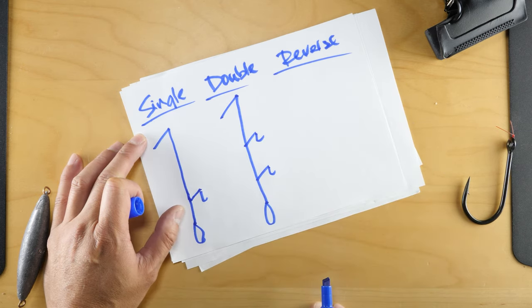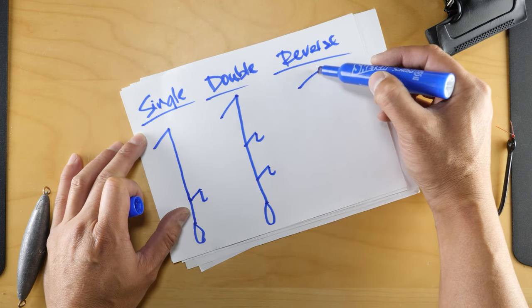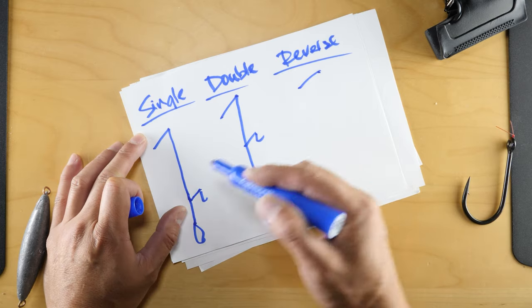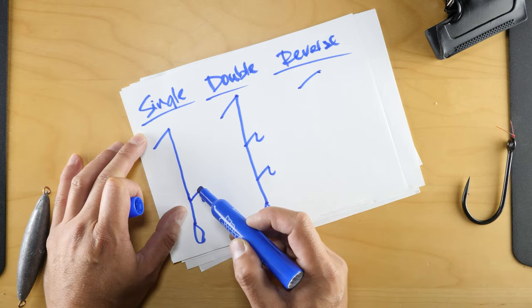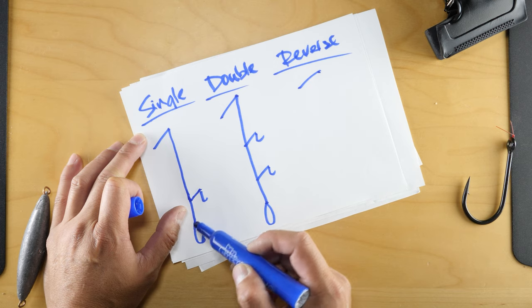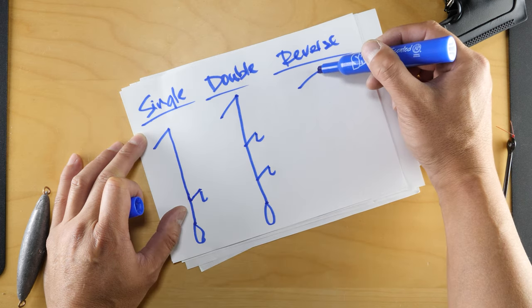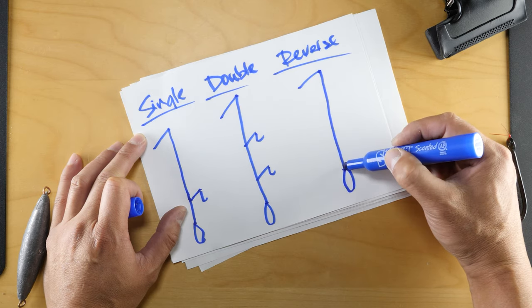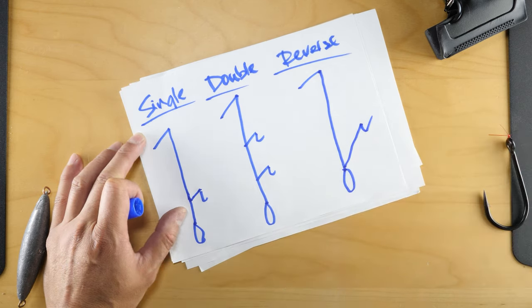On the reverse, slightly different. We're gonna take what looks like a single drop loop. Instead of the hook here, we're gonna drop it on the bottom, and we're gonna put the weight where the hook is. So it'll look something like this when we do it all, and that's your hook right there.